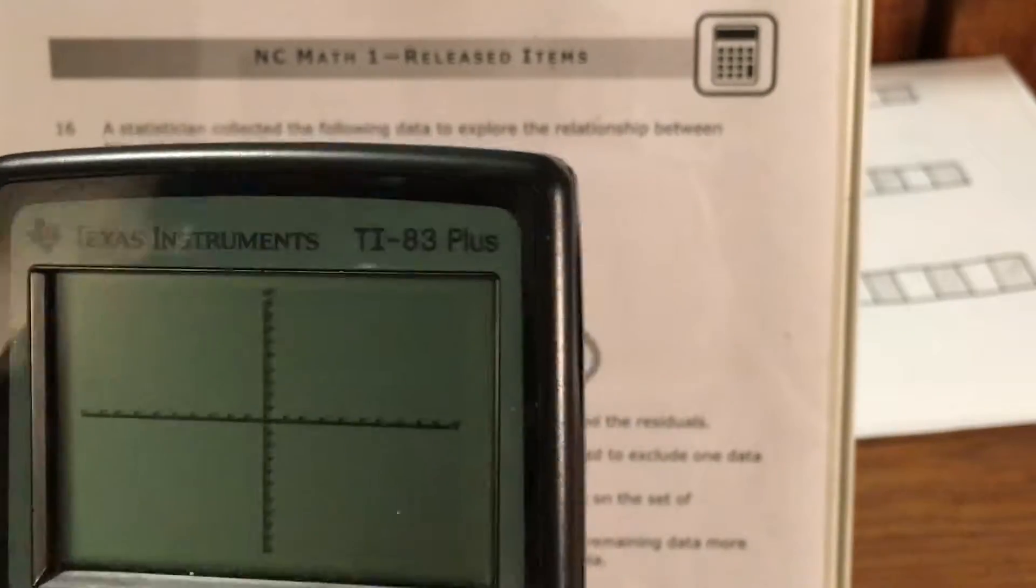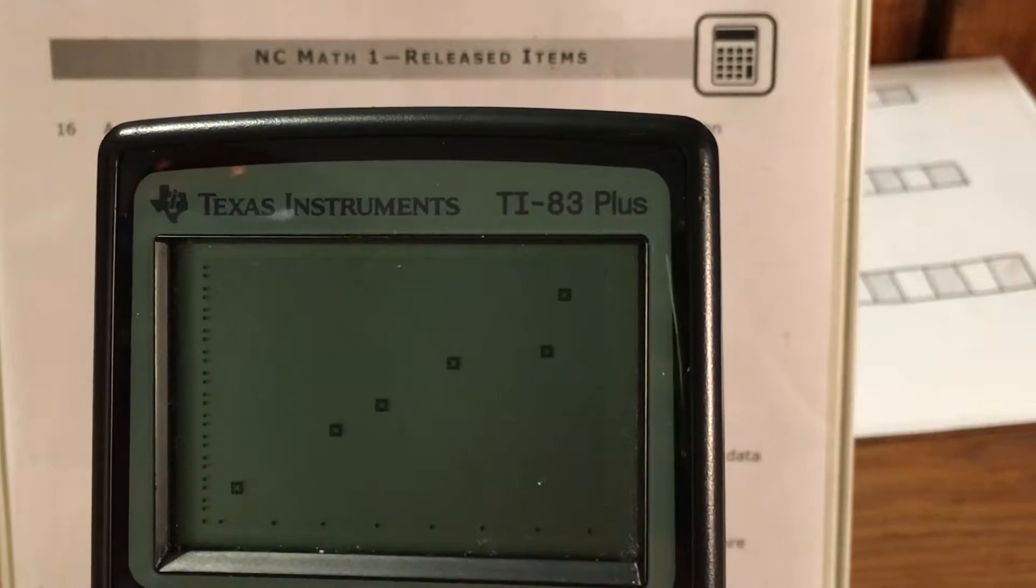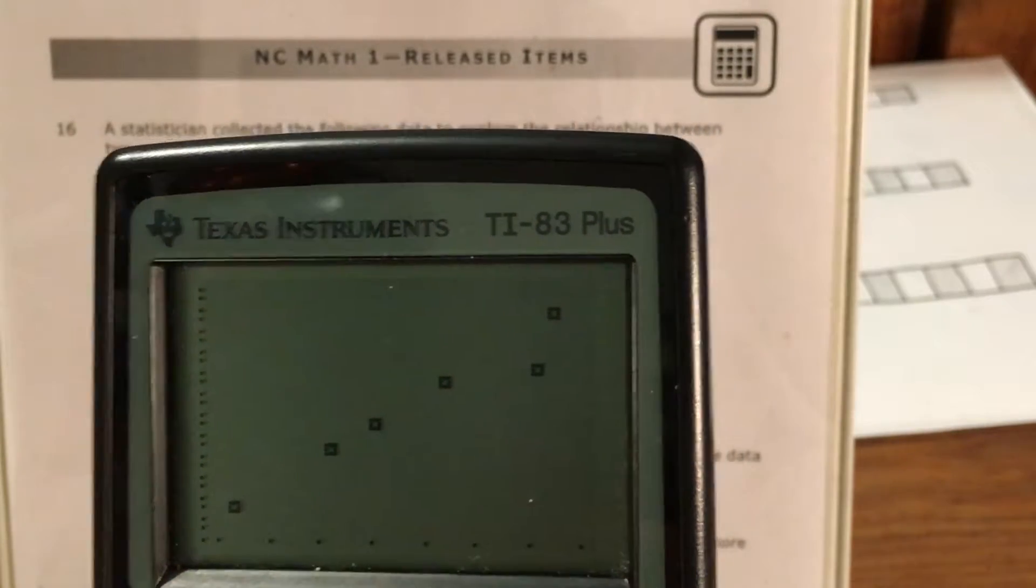But if I press zoom again and go to zoom stat, now I can still see my x and y axis but now it's going to show me all my points.